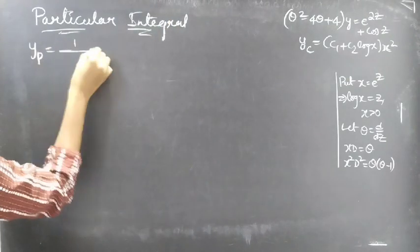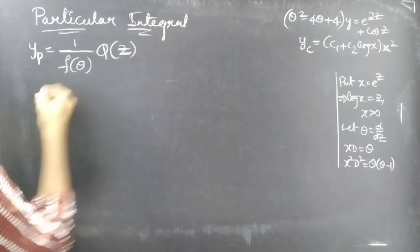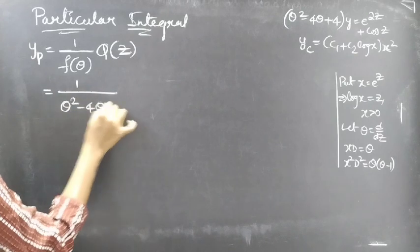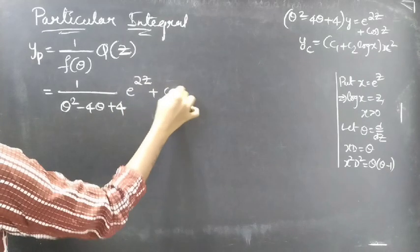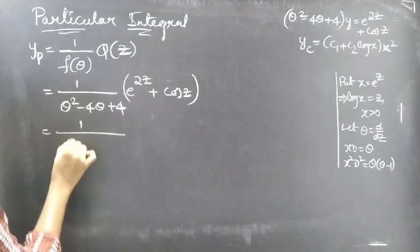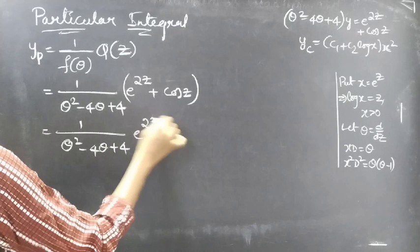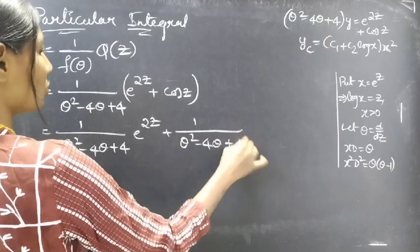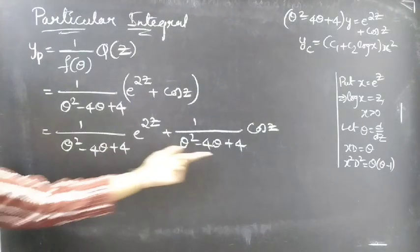We will find the particular integral using 1/f(theta) · Q(z). We have f(theta) equals theta² minus 4·theta plus 4 and Q(z) equals e^(2z) plus cos z. So yp equals 1/(theta² minus 4·theta plus 4) · e^(2z) plus 1/(theta² minus 4·theta plus 4) · cos z. We can find each term separately.